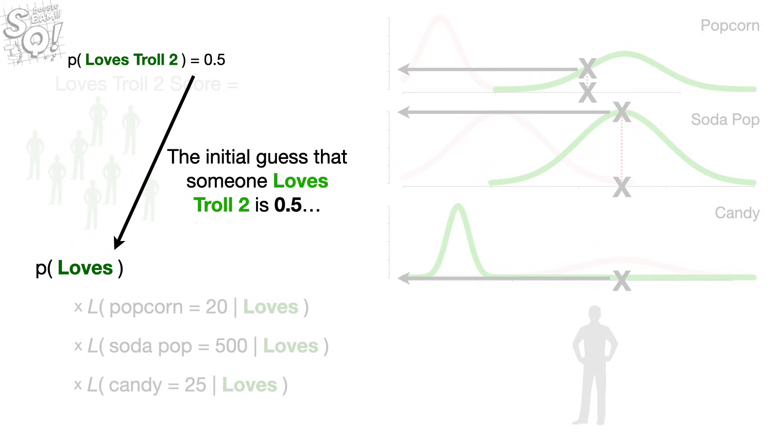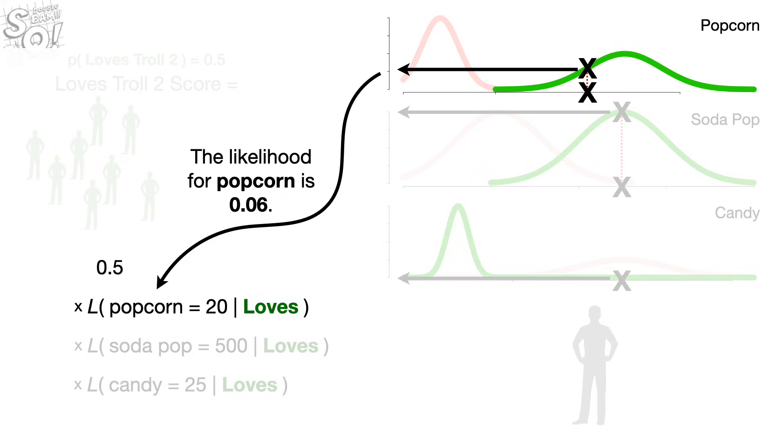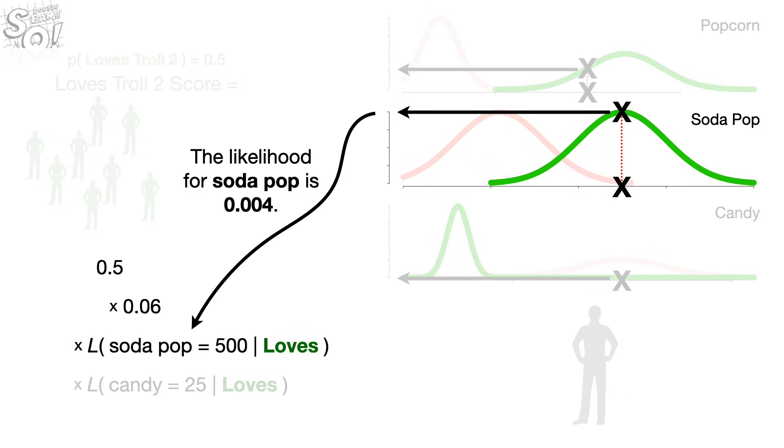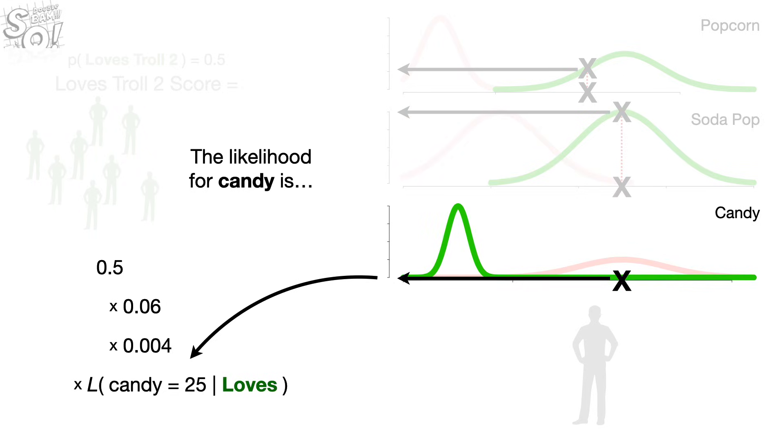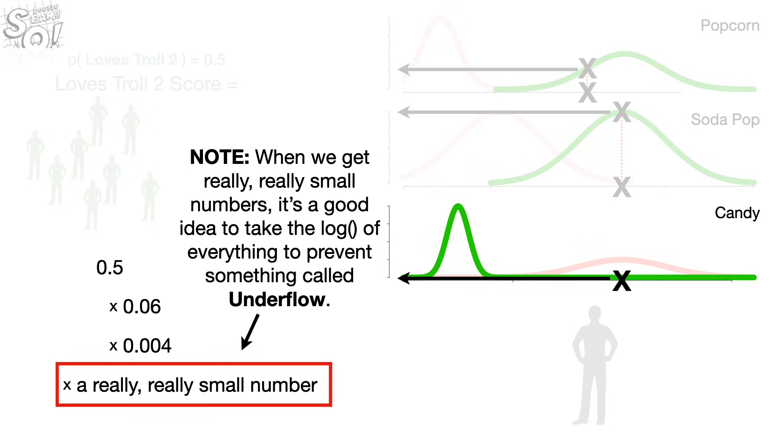The initial guess that someone loves Troll 2 is 0.5. The likelihood for popcorn is 0.06. The likelihood for Soda Pop is 0.004. And the likelihood for candy is a really, really small number. Note, when we get really, really small numbers, it's a good idea to take the log of everything to prevent something called underflow.